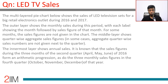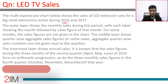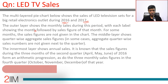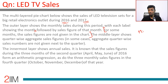The multi-layered pie chart below shows the sales of LED television sets for a big retail electronics outlet during 2016 and 2017. The outer layer shows the monthly sales during the period, with each label showing the month followed by a sales figure. For some months, the sales figures are not given in the chart. We usually have some questions where there are missing numbers — it's like a puzzle. We figure out that puzzle, fill the missing numbers, and then do the data interpretation.